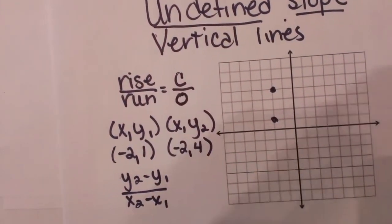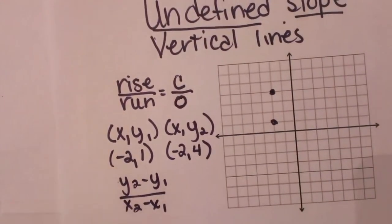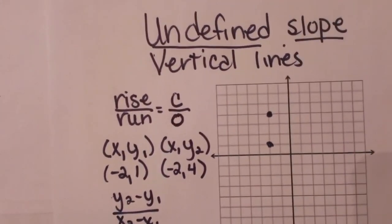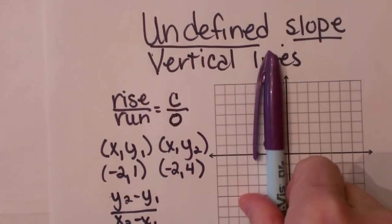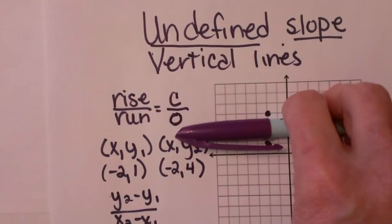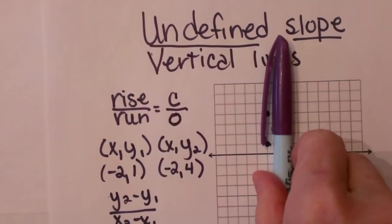An undefined slope is associated with vertical lines, and a vertical line is a line that goes up and down, not left to right. It is a vertical line that is up and down.